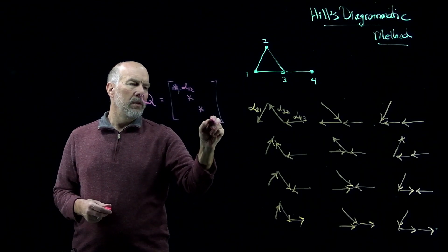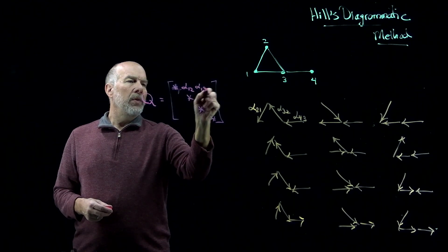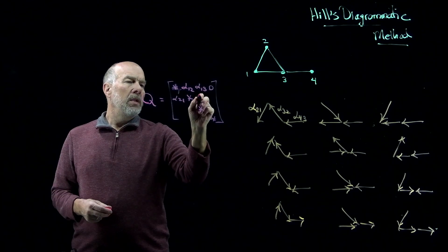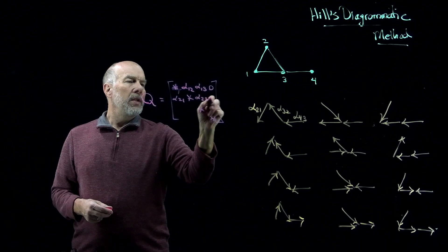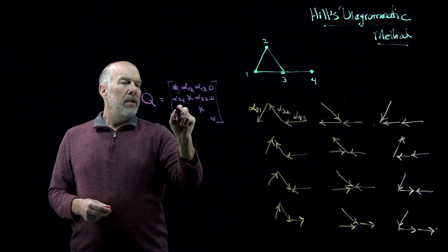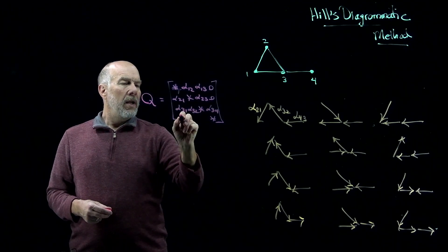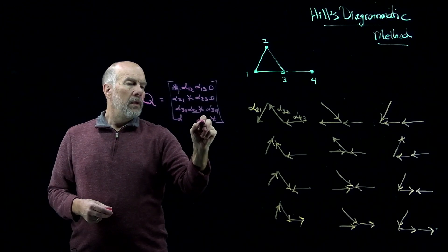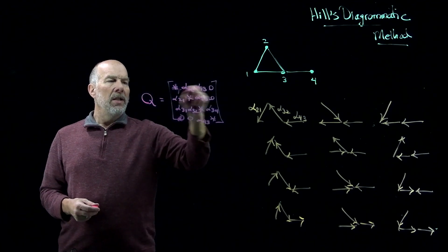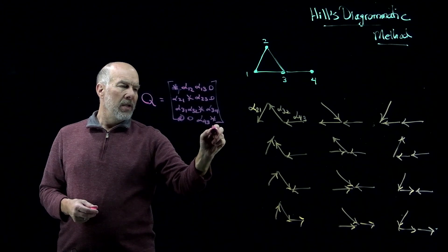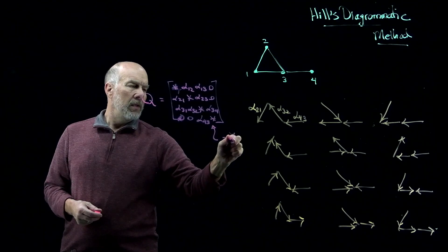Alpha three, 1, alpha 3 to 2, alpha 3 to 4, alpha 4,3, 0, 0. So there's our generator matrix. And remember, the star is the opposite of whatever's in that particular row. So this star is just minus alpha 4,3.